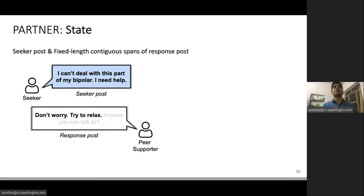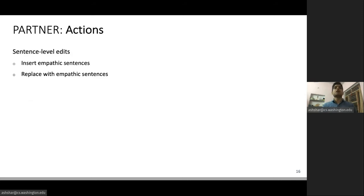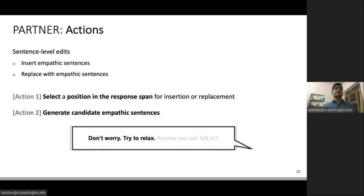We use seeker posts and fixed length contiguous spans of response posts as our states. Our model takes sentence level edits as actions. It will either insert empathic sentences at various positions, or it will replace existing low empathy sentences with sentences that are more empathic. To be more concrete, at each step it will take two actions. The first action is selecting a position in the response span for insertion or replacement. And the second action is generating candidate empathic sentences to be used at those positions.